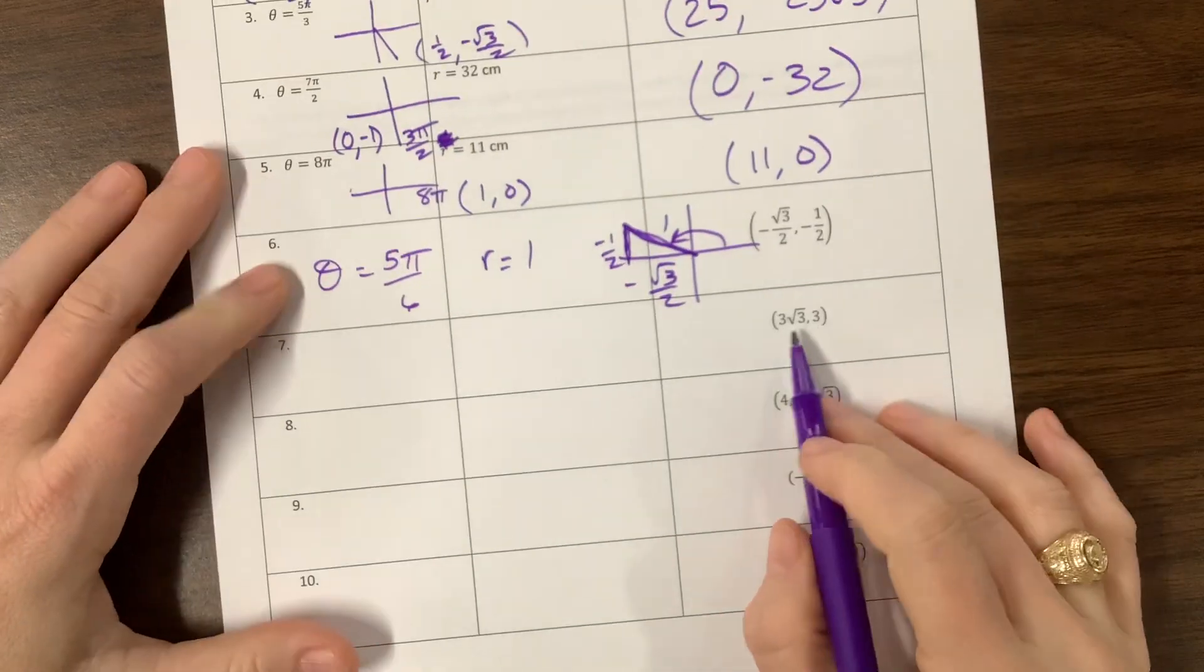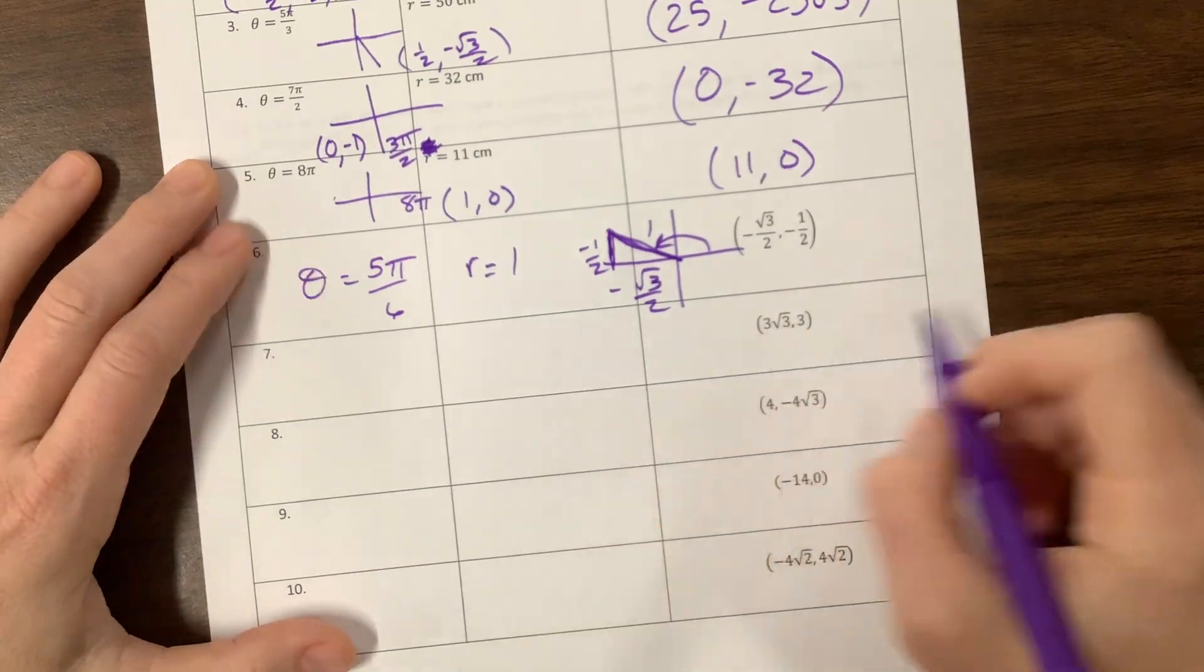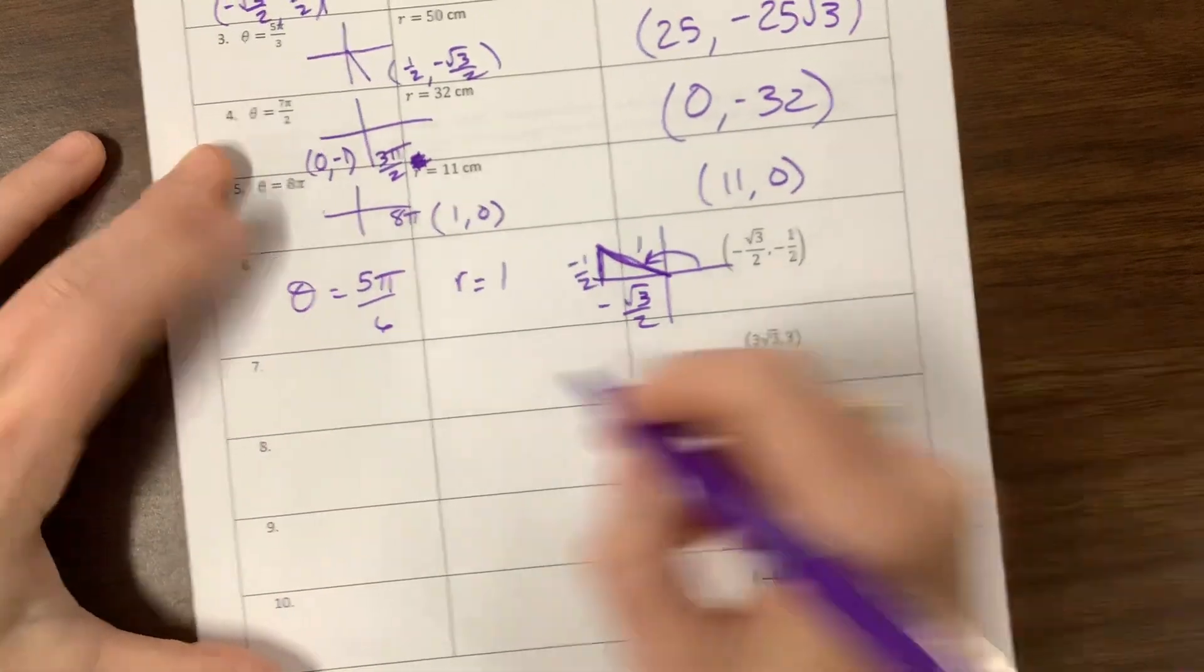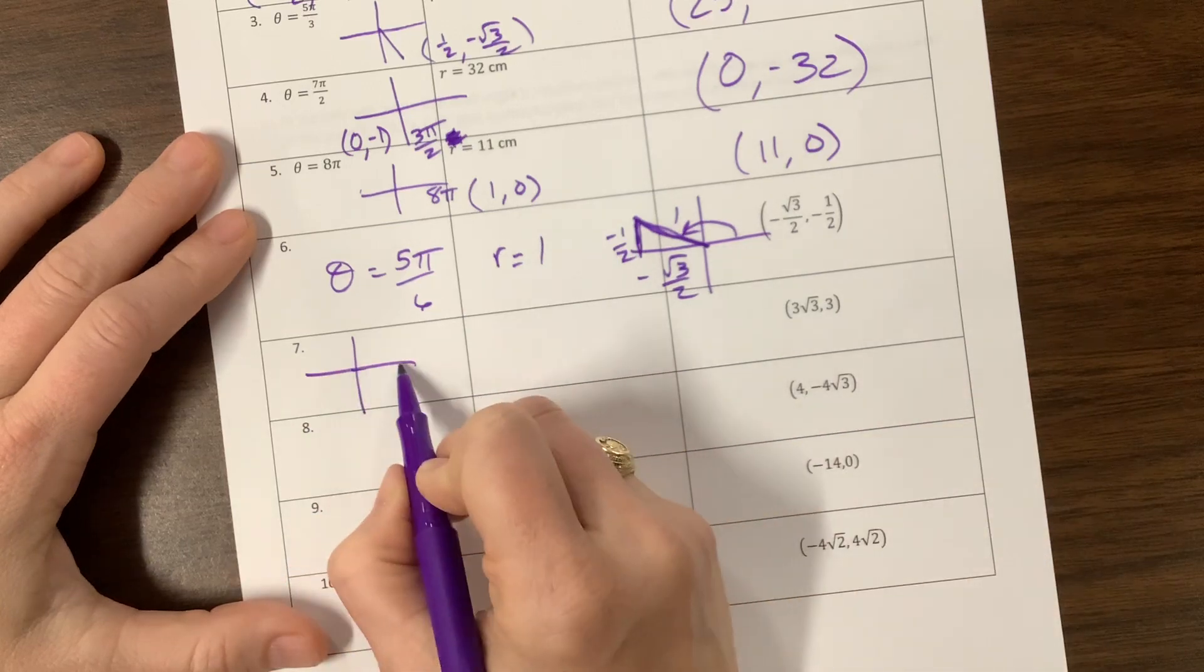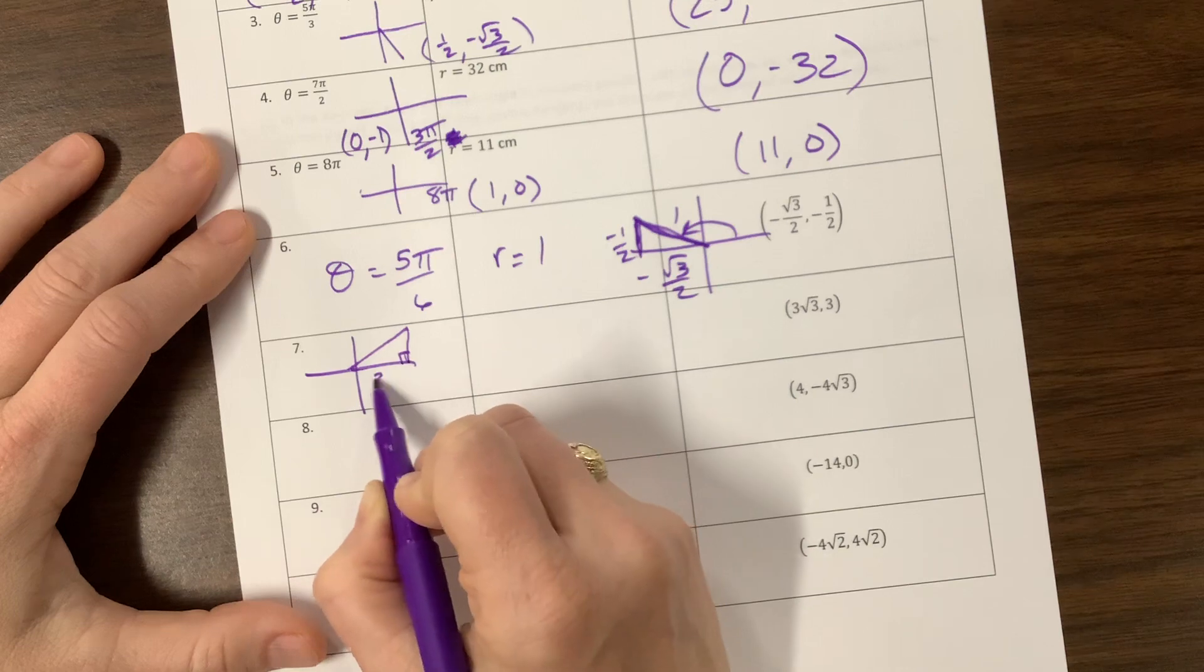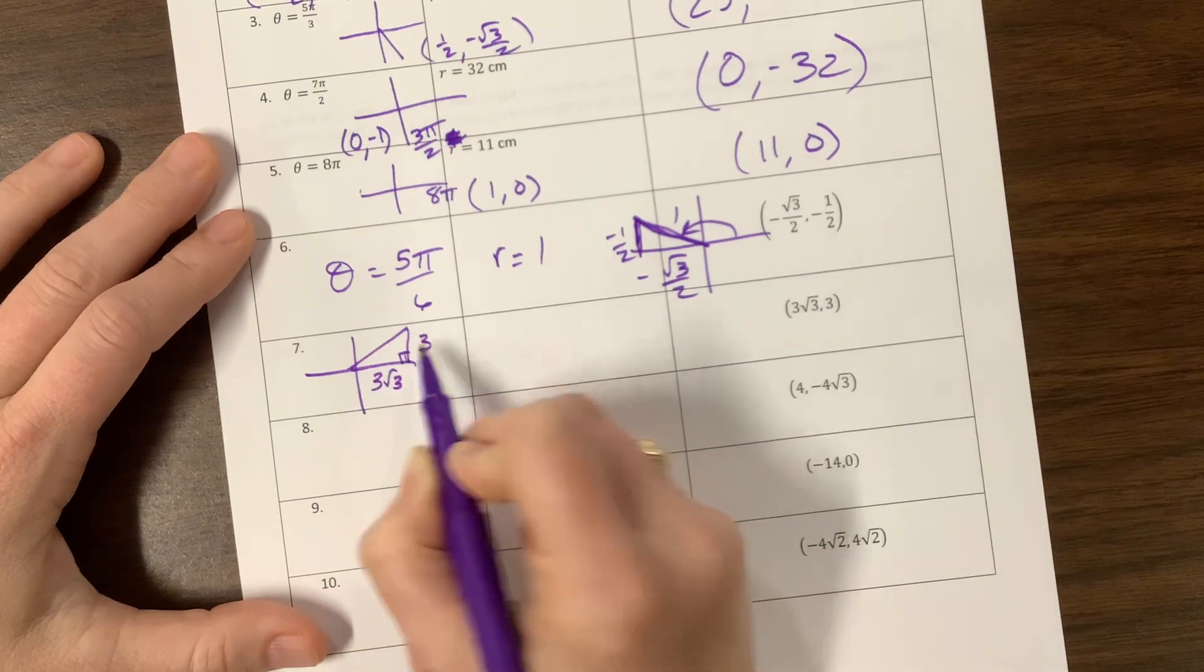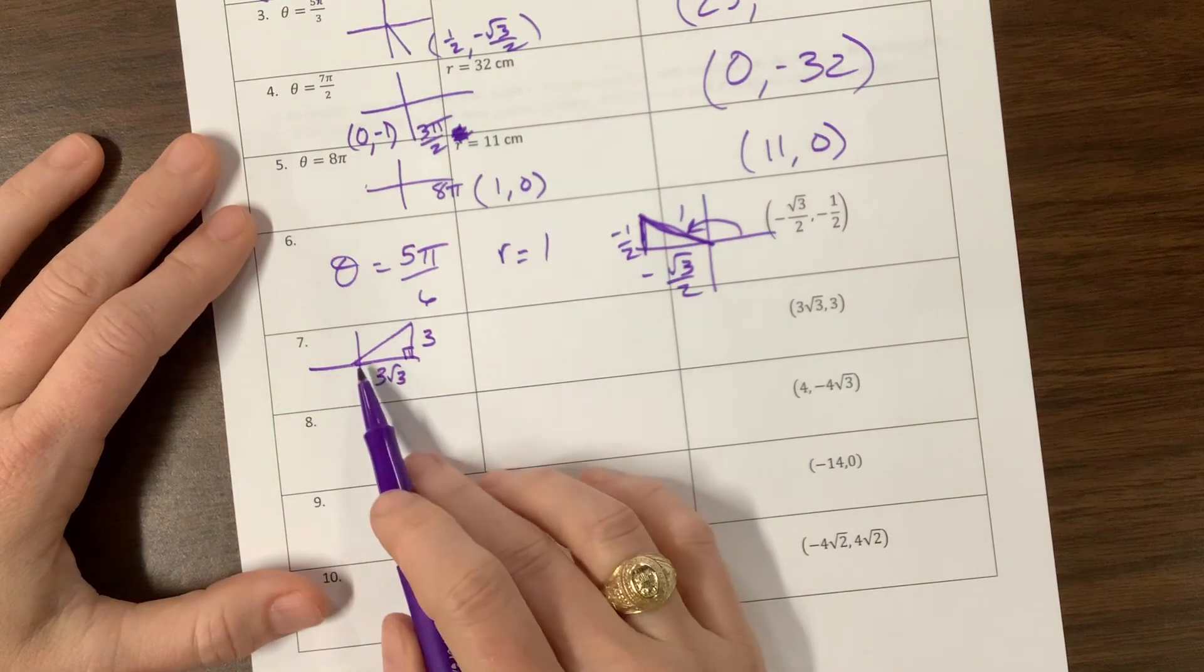The next one, 3√3, 3—what I'm looking at here—I'm going to draw it over here. 3√3 means I went over a decent amount, and then I went up a bit. So I see 3√3 and I see 3. When I see √3, I'm thinking 30-60-90.